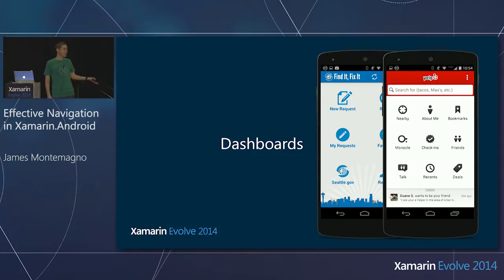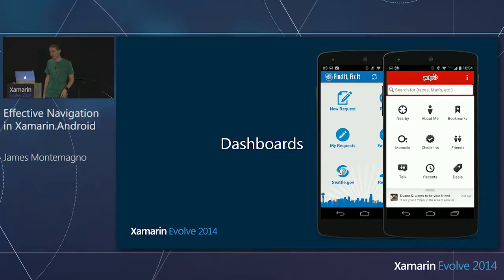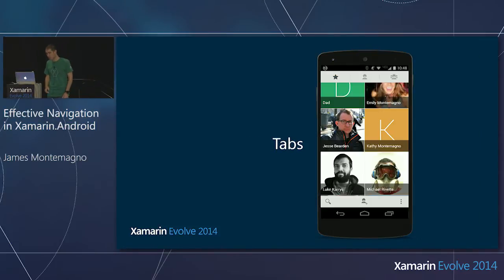A few issues with dashboards: what happens when I have more than nine or six sections? Do I keep having users scroll down? Also, when you look at these pages — like Yelp — where is the information that's important to me right now? If I think of Yelp and I pull it out, they know my location, they probably know what I'm looking for. But there's no information on what's around me or what's good right now. Dashboards work, they're easy, you get some icons.